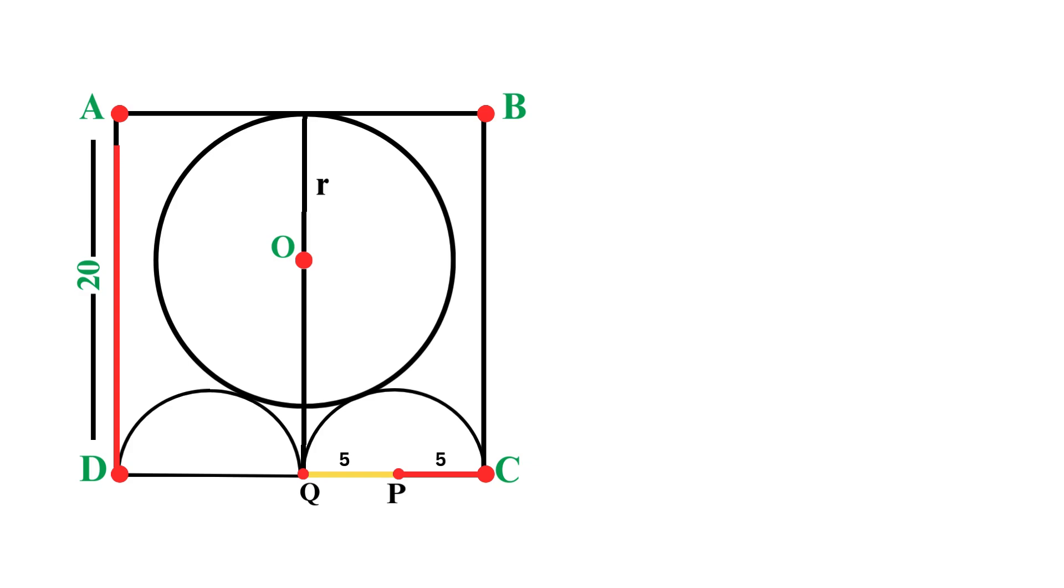If we look at the left side of our square, we can see it has a total length of 20 units. Now, think about how this distance breaks down. From the top of the square down to the center O, that's a distance of r because the radius extends upward to touch the top side. And from the center O down to the bottom, this remaining distance must be 20 minus r. Therefore, the vertical distance from O to Q equals 20 minus r.